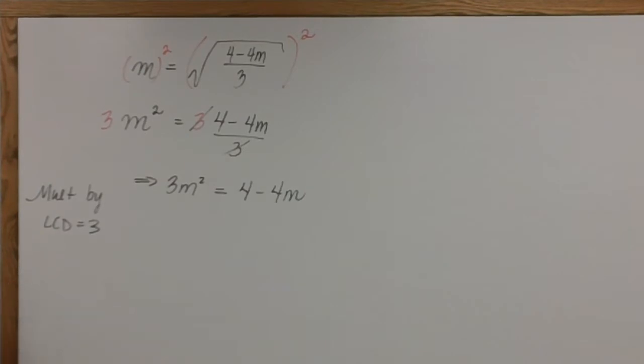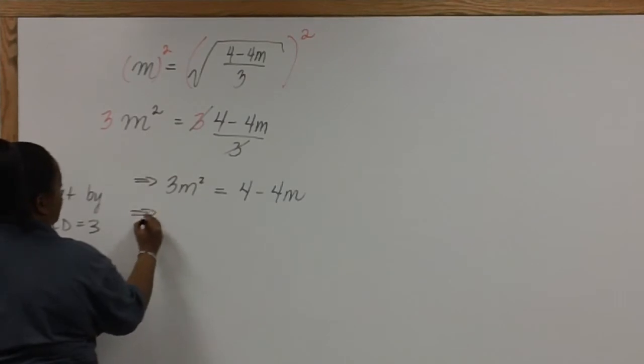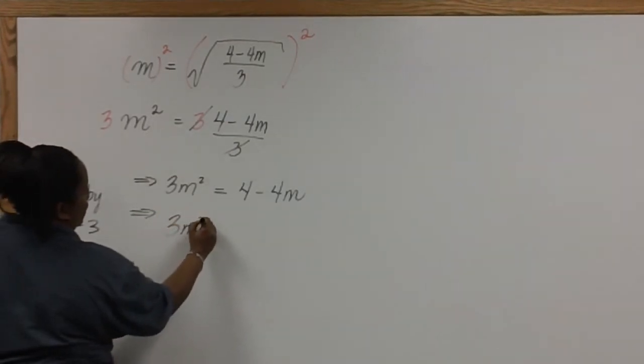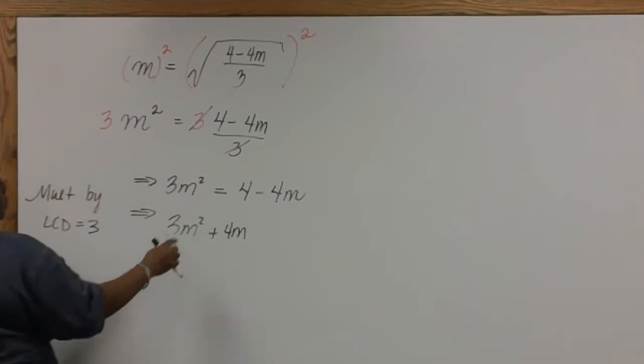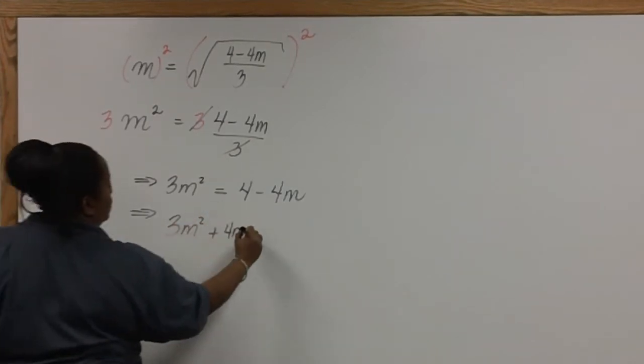Now we need to set this equal to zero. To do that, we'll need to add 4m to both sides and subtract 4 from both sides.